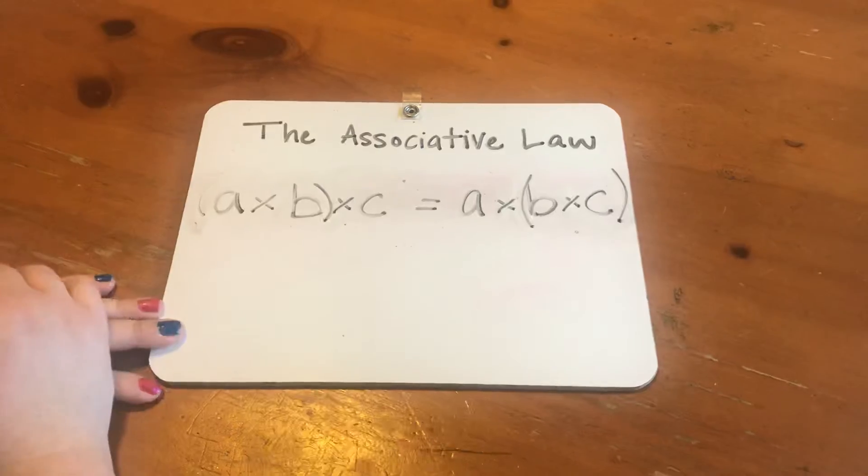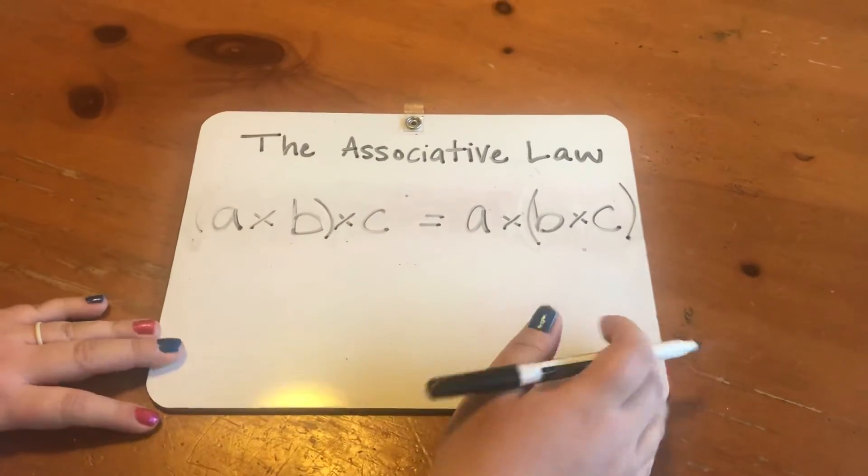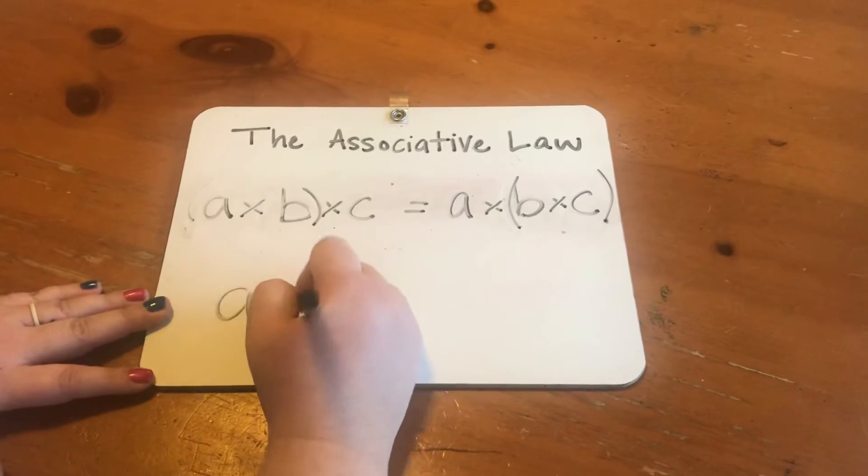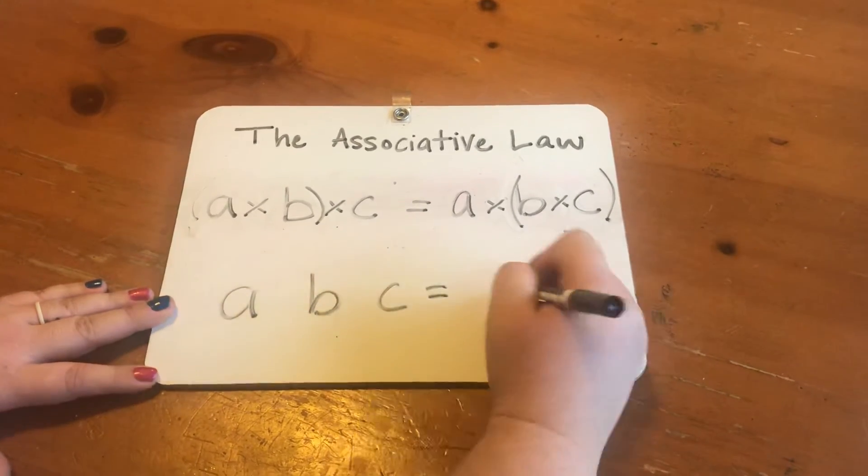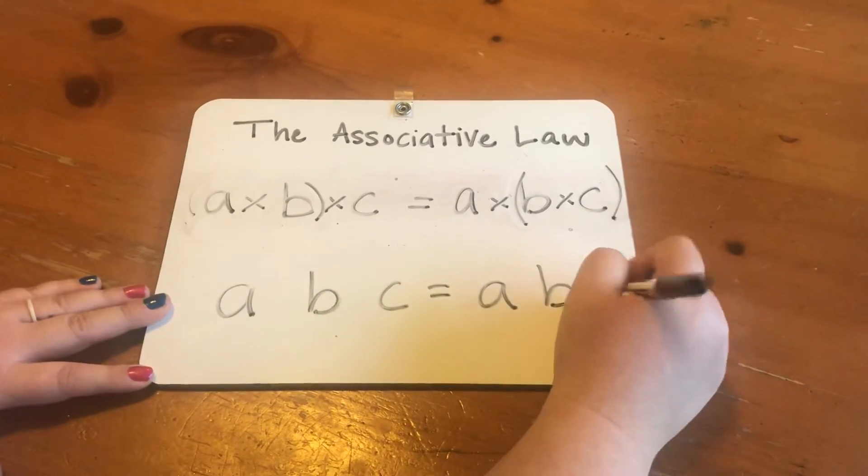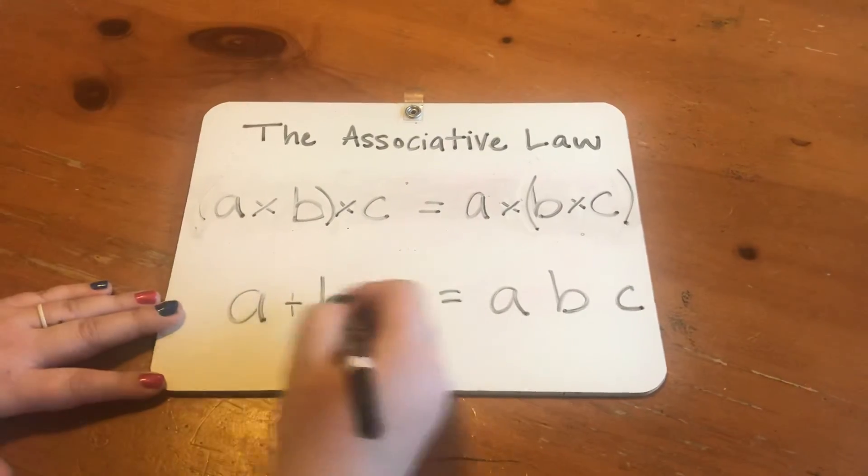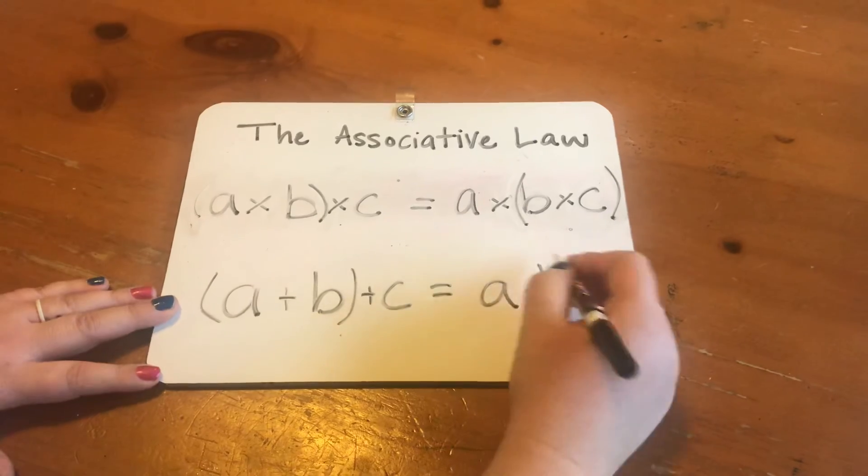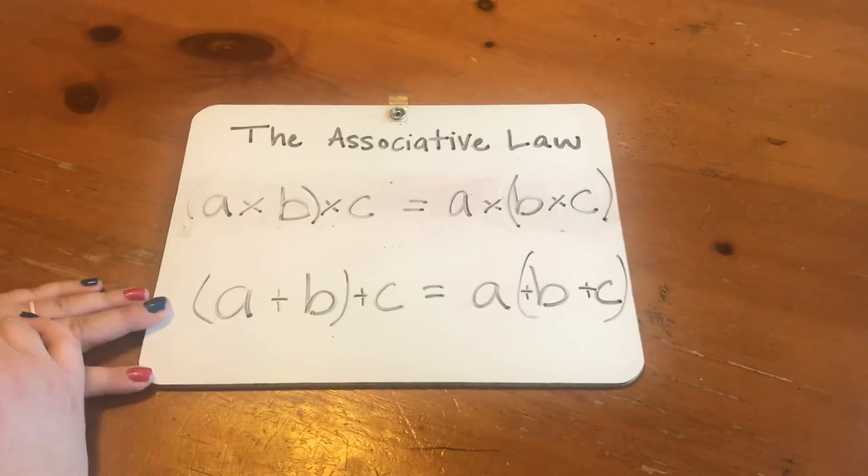This is probably for older kids that can write it out. But even for the younger ones, what I've done in years past is have a piece of paper that already says ABC in pen. And then all they have to do is add in the plus signs and the parentheses. Thanks.